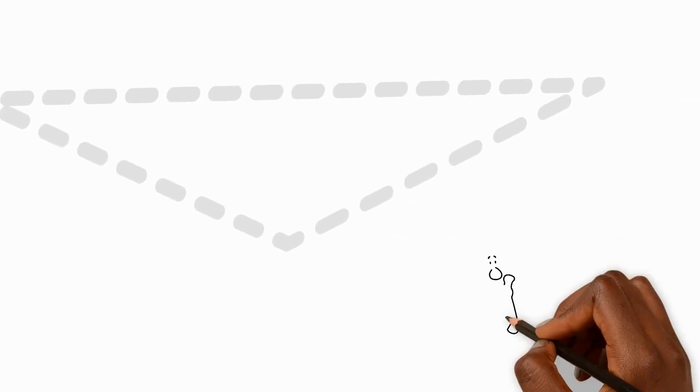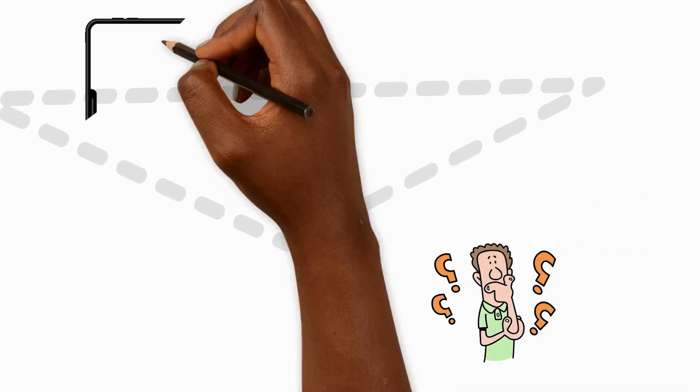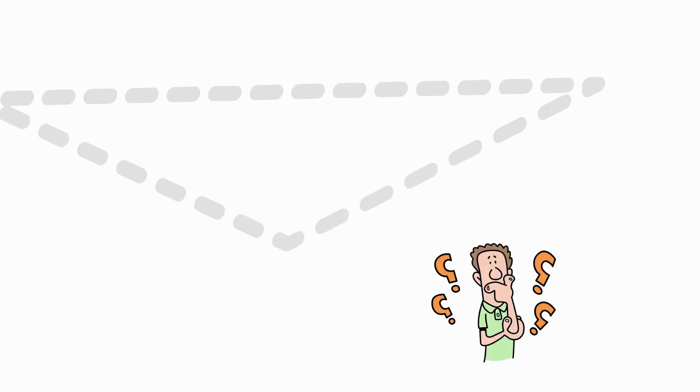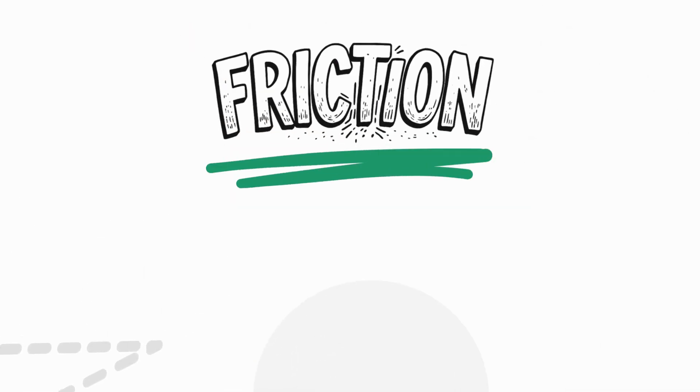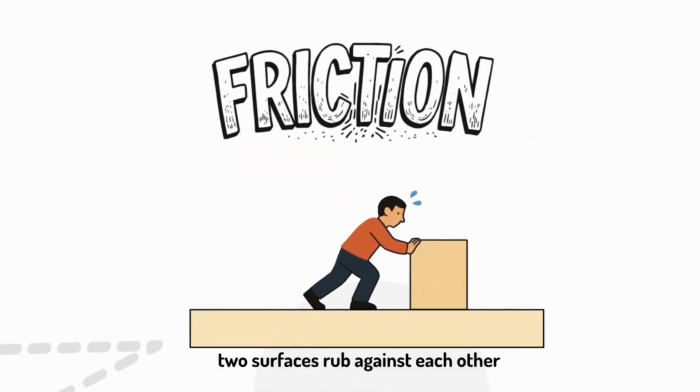Every time your finger touches a screen you're using a contact force. But have you ever wondered why your finger doesn't just slip right off the screen? Well that's because of friction, a force that happens when two surfaces rub against each other.